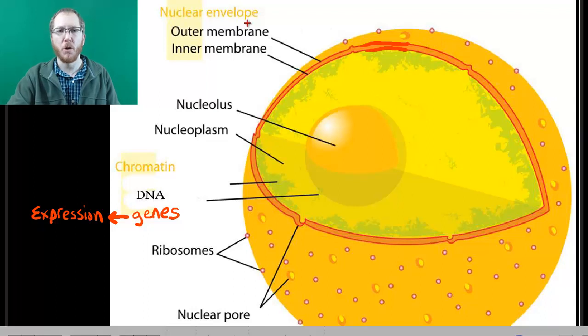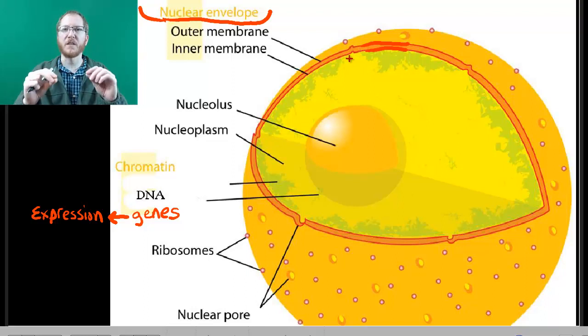So we call this the nuclear envelope, you can see that up at the top here, and the nuclear envelope will consist of an outer and inner membrane. So each of these will be its own full membrane. Each of these is its own phospholipid bilayer with its own proteins and everything else mixed in.